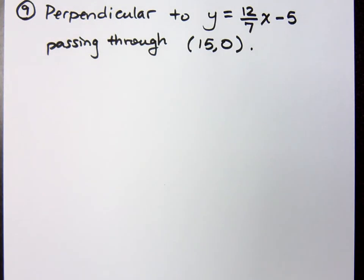All right, let's take a look at this problem. You want to be perpendicular to y equals 12 sevenths x minus 5, and you're passing through the point 15, 0.